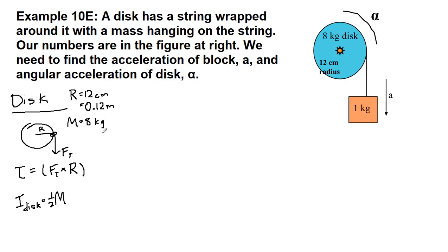So the mass of the disk, we're told is 8 kilograms, times the large radius of the disk squared. So the moment of inertia here is one half times eight times 0.12, and that last part is squared. That gives us 0.0576 kilograms meters squared.